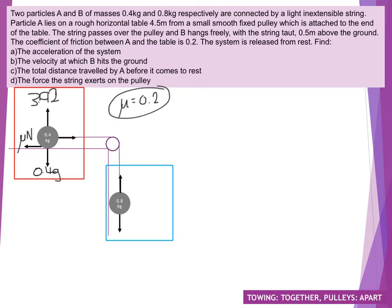In part C, we're looking at the total distance travelled by A before it comes to rest. We know it travelled at least 0.5 metres because until B hit the ground it would have been moving those 0.5 metres as well. What we need to figure out is how far it travels after B has hit the ground. Once B has hit the ground, the string is going to go really slack — it's no longer going to provide any tension, so it won't have that acceleration pulling it forwards anymore.